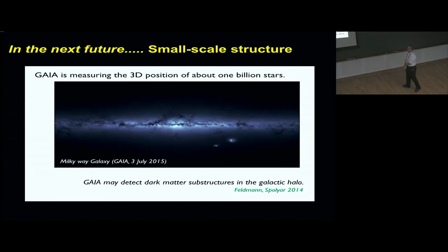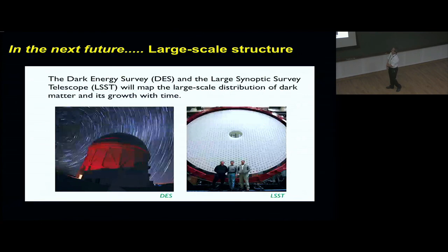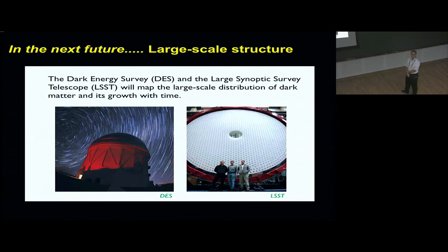What will happen in the next future? We will have Gaia taking data on about 1 billion stars in the galaxy, and this may produce results on substructures in the galactic halo. The Dark Energy Survey and the LSST telescope will map the large-scale distribution of dark matter and its growth with time. This will correlate the properties of dark matter, and is especially important for indirect detection.